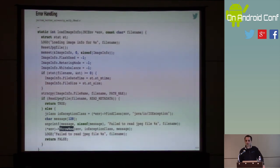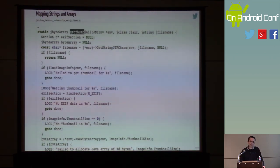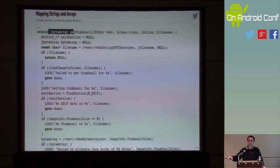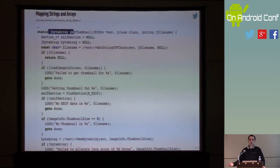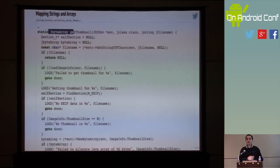Now, mapping strings and arrays. Remember, getThumbnail is supposed to return a byte array. Java byte array isn't the same as C byte array. C byte array is fixed — we know its size and the address doesn't change. Whereas Java byte arrays are logical pointers whose size is known, and they can be remapped in memory without us being notified about it — because it's logical versus physical.